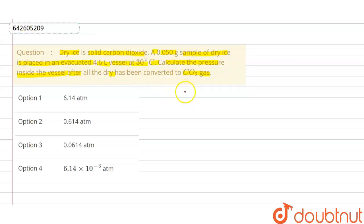Now for that, first of all we can find the number of moles. Number of moles is given mass upon molar mass, so given mass is 0.050 divided by molar mass. CO2 molar mass will be equals to 44.